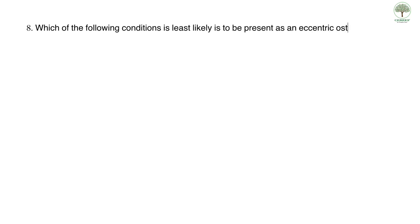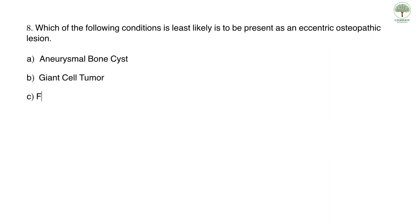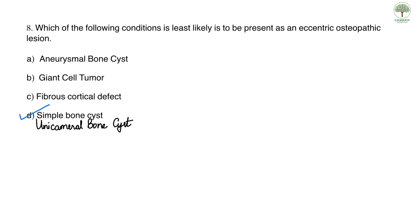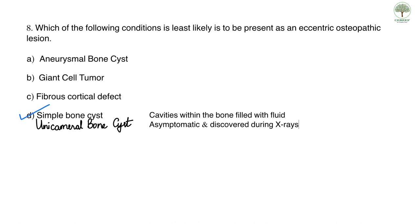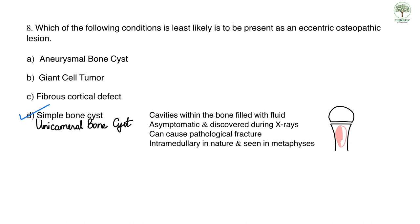Question eight: which condition is least likely to present as an eccentric osteopathic lesion? Options are aneurysmal bone cyst, giant cell tumor, fibrous cortical defect, and simple bone cyst. The correct answer is D, simple bone cyst or unicameral bone cyst. These are cavities within bone filled with fluid; patients are usually asymptomatic and discovered on routine X-rays. They are intramedullary in nature, found in the metaphysis region, and can occasionally cause pathological fractures.